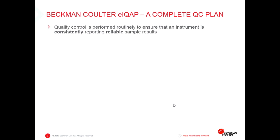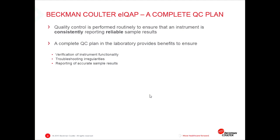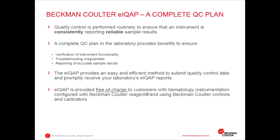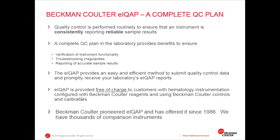So what is the Beckman Coulter program? QC is performed routinely to ensure an instrument is consistently reporting reliable results. A complete QC plan in the laboratory will provide benefits to ensure the verification of functionality, troubleshooting, and, of course, accurate patient results, which are of utmost importance. The eKoIP portal allows you to submit quality control data and promptly receive reports comparing you to your peer groups. It's free of charge to customers with all hematology instrumentation configured with Beckman Coulter reagents and using Beckman Coulter controls and calibrators. This offering has actually been around since 1986, which predates the World Wide Web, and we've been innovating in this offering for several decades. I think the latest generation is quite exciting.